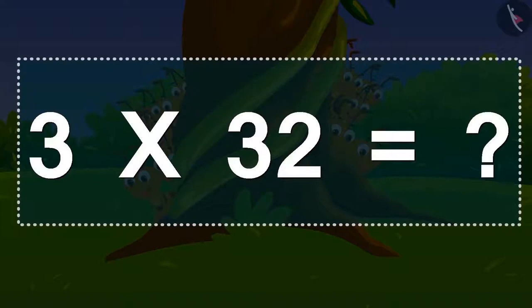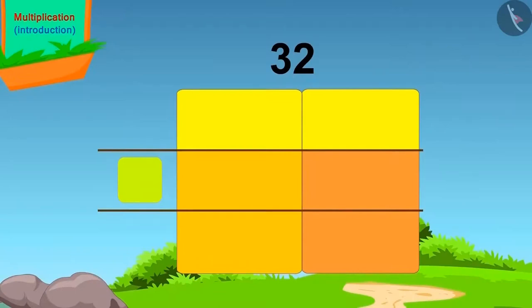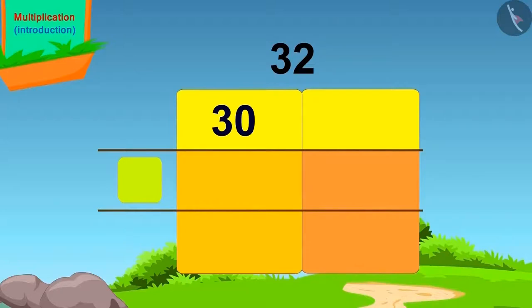Three times 32 is... But we do not know the multiplication table of 32. What we will get if we split 32? 30 and 2. We will write it in this way.